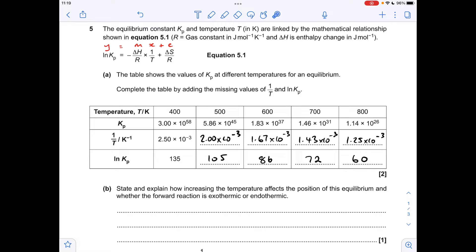So moving on to part B, I've got to state and explain how increasing the temperature affects the position of the equilibrium and state whether the forward reaction is exothermic or endothermic. So what we need to do is look at how temperature is affecting Kp. So you can see as the temperature is going up, Kp is going down.